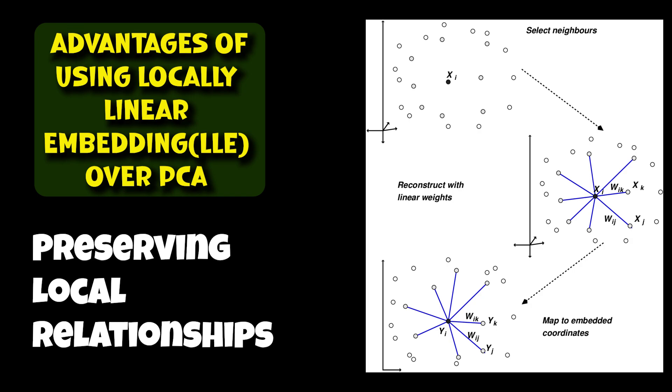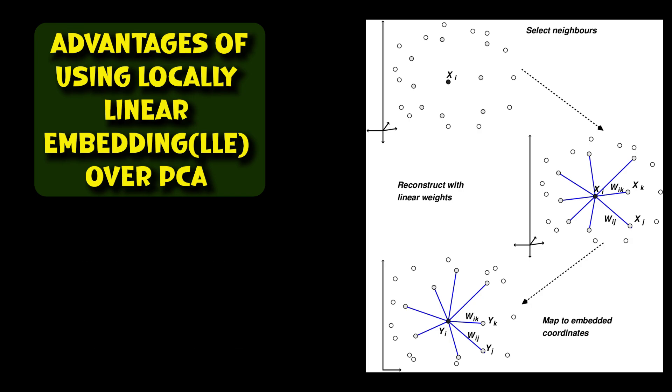For example, in an image recognition task, LLE can be used to reduce the dimensionality of images while preserving the local pixel relationships, which might be crucial for distinguishing between different objects or classes. Another advantage is robustness to noise.